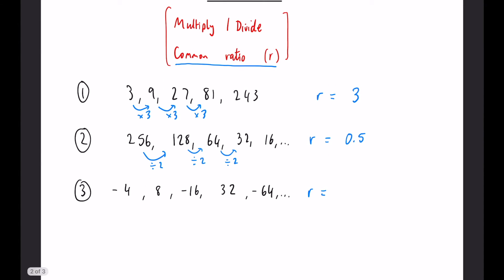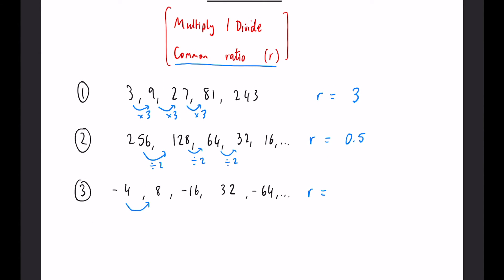And finally, for this one, you can see they're alternating in terms of positive and negative between each term. So that indicates it is going to be a negative ratio this time. Because if you take a negative and multiply it by a negative, it's going to make it positive again, whereas if you take that positive and multiply it by a negative, it's going to be negative the next time around. And if you look at the numbers themselves, 4, 8, 16 and so on, it's 2. So we have a common ratio of minus 2, and that's our final answer for that one.